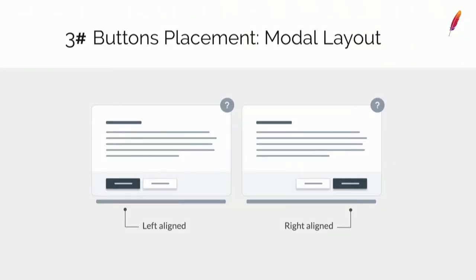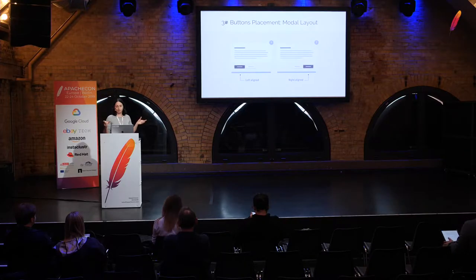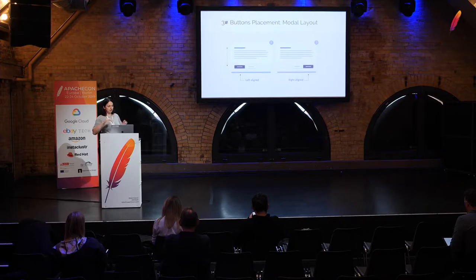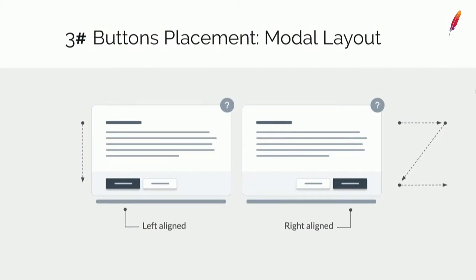A big debate among designers is where to place buttons on a modal — left side or right side. Left-align is very good for vertical scanning: the user just reads the title and goes to the button. But when the user needs to read the description text, the reading flow changes to a Z-shape. With Z-shape on vertical alignment, they first read the primary button, go to the secondary action, then need to go back — so it's a bit slower than right alignment.